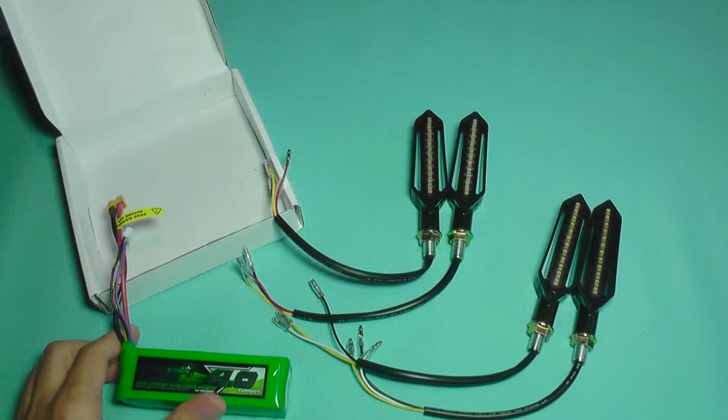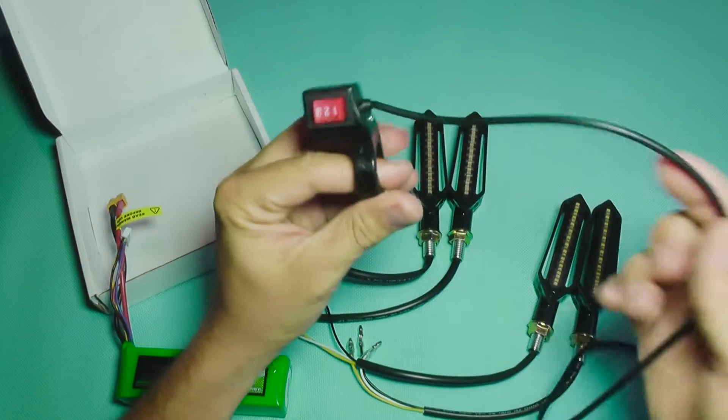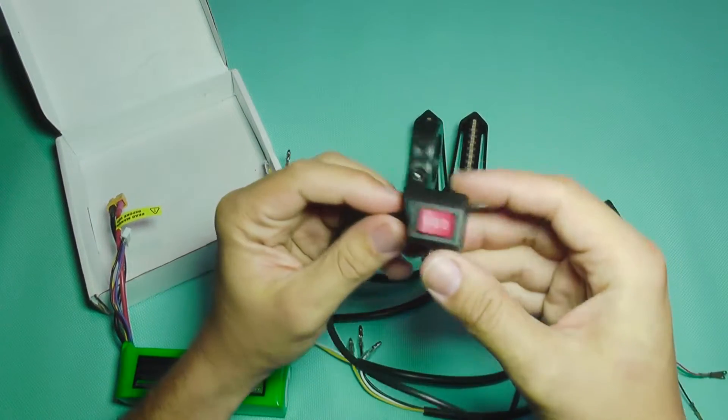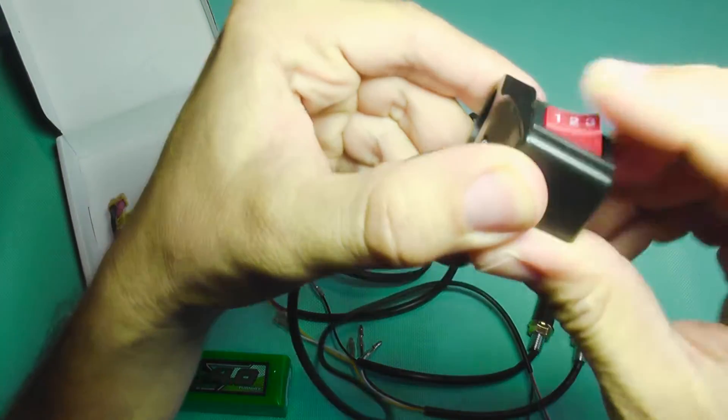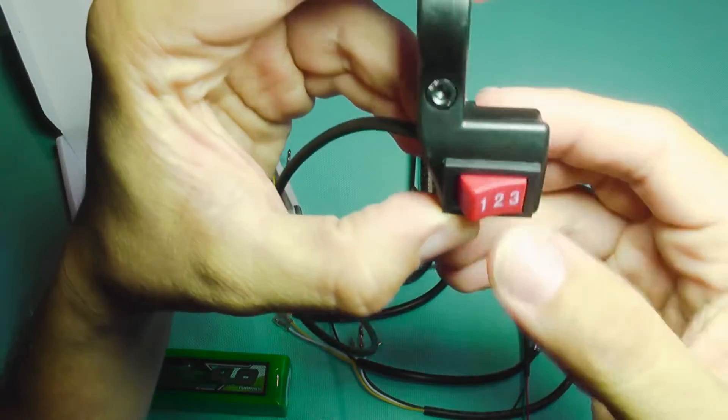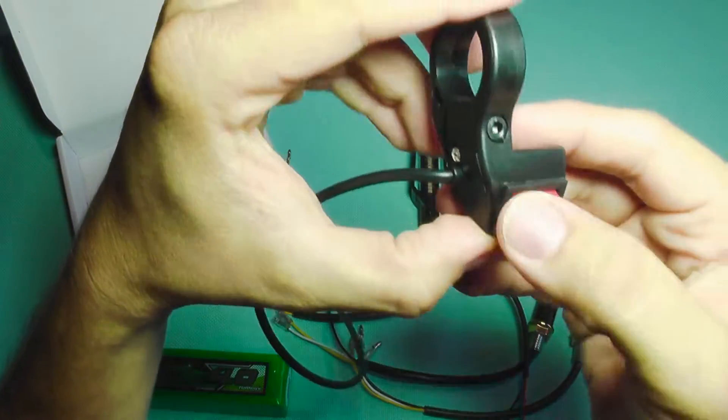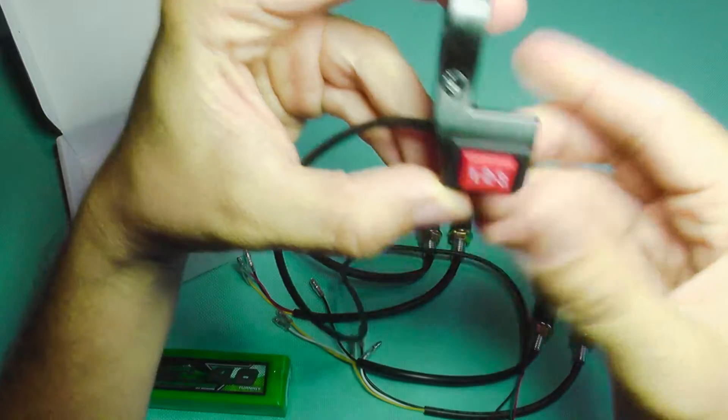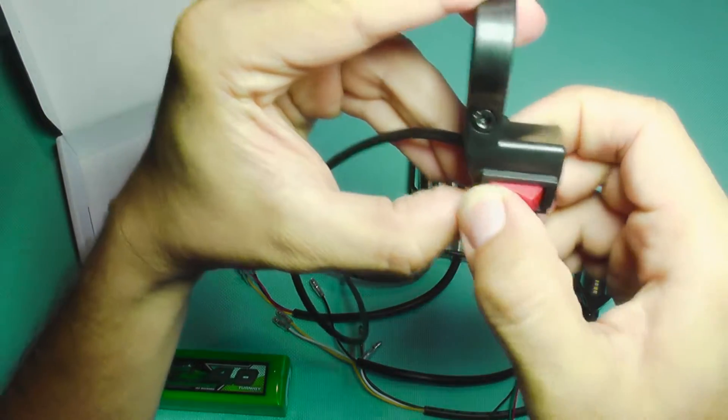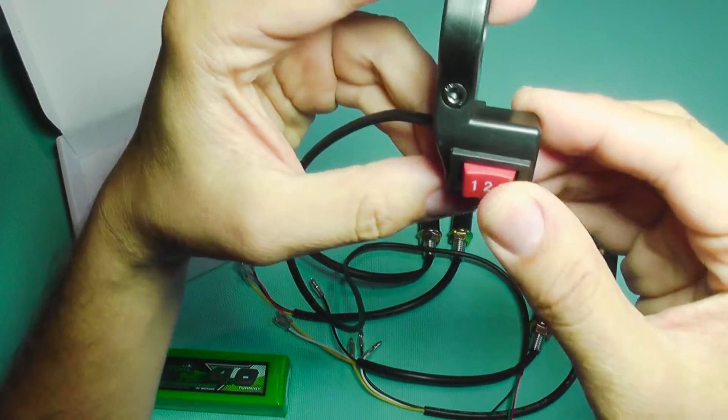You can also get one of these—it's a very cheap simple switch that has a rest position, a right position, and a left position. Of course, you can use any kind of combination. You can use this in the middle so you have turn lights like left turn light, right turn light if you want to.